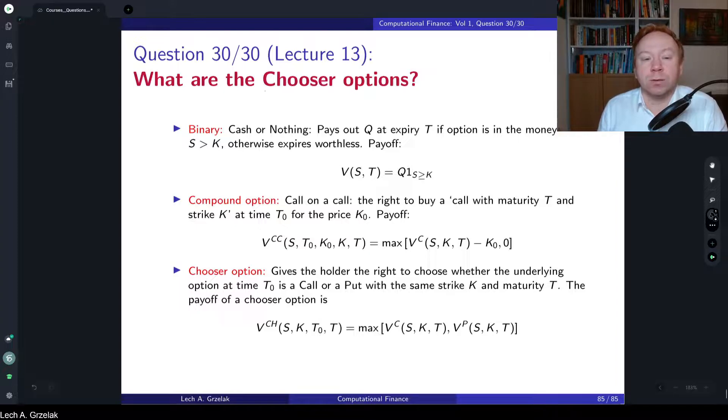For this question you have to know what exactly the chooser option is. In finance, in financial engineering, for all sorts of payoffs we have typically different names. Therefore it is important that you will be familiar with those names. In this course, in this lecture, we have discussed a number of possible payoffs and this is one of them. To give you a flavor of possible exotics you may consider, I have prepared three in this question.